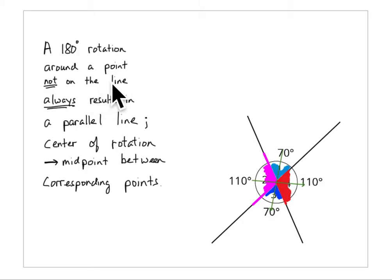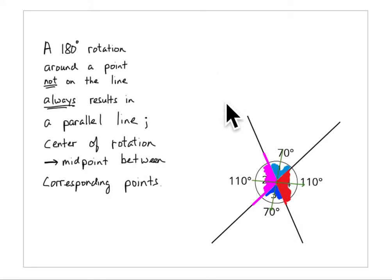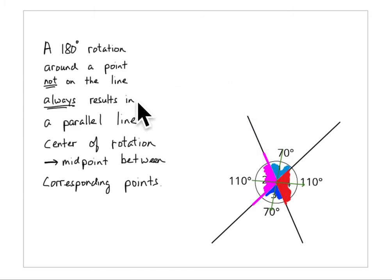A 180-degree rotation around a point not on the line always results in a parallel line. The center of rotation is the midpoint between the corresponding points. This is a little different than what's in the student workbook. I'm going to take this entire image and rotate it 180 degrees around a point not on the line — this line here is going to end up parallel over here, and this line is just going to be extended. You'll end up with two parallel lines and a line running between them, which is called the transversal.